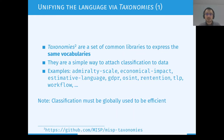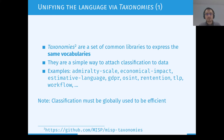Back to taxonomies: taxonomies are a set of common libraries to express the same vocabularies, and a simple way to attach classification to data. Here are a few examples: admiralty scale, economic impact, estimative language, and TLP that you probably know. Something important is that classification must be used globally to be efficient — ideally everyone uses the same taxonomies to describe the same thing. Otherwise, if everyone uses different tags, you can't do anything with it because you may not understand what other parties are sharing.